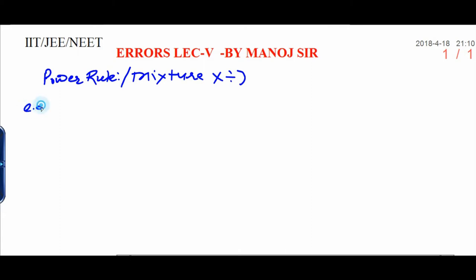For example, I am just taking a simple equation. P is a quantity which is equal to a raised to power n and b raised to power m and divided by c is another quantity having power t. Now, question is find percentage error of P. Let's see how you calculate it.